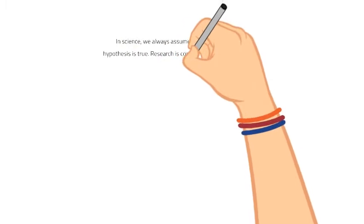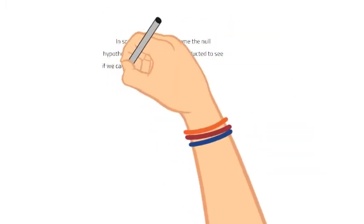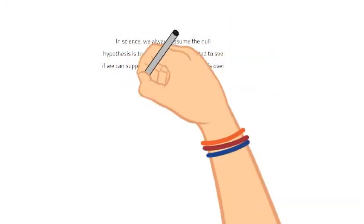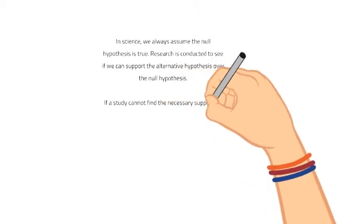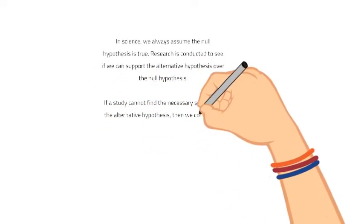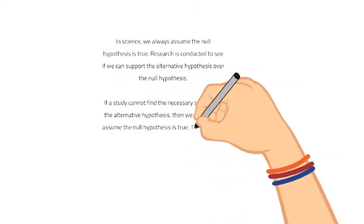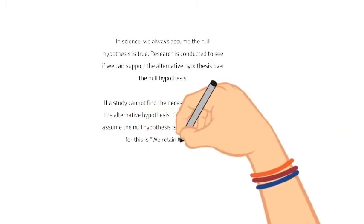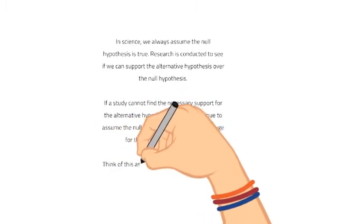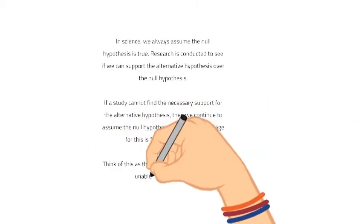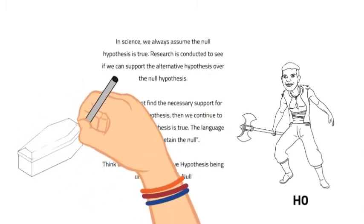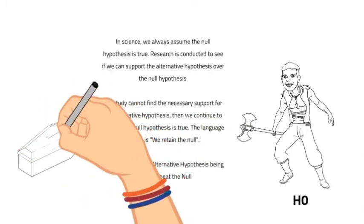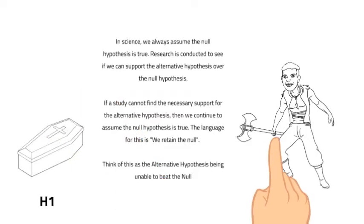In science, we always assume the null hypothesis is true. We conduct research to see if we can support an alternative hypothesis over the null — that's why we call it the alternative hypothesis. If a study cannot find the necessary support for the alternative hypothesis, then we continue to assume that the null hypothesis is true. The language we use for this is we retain the null.